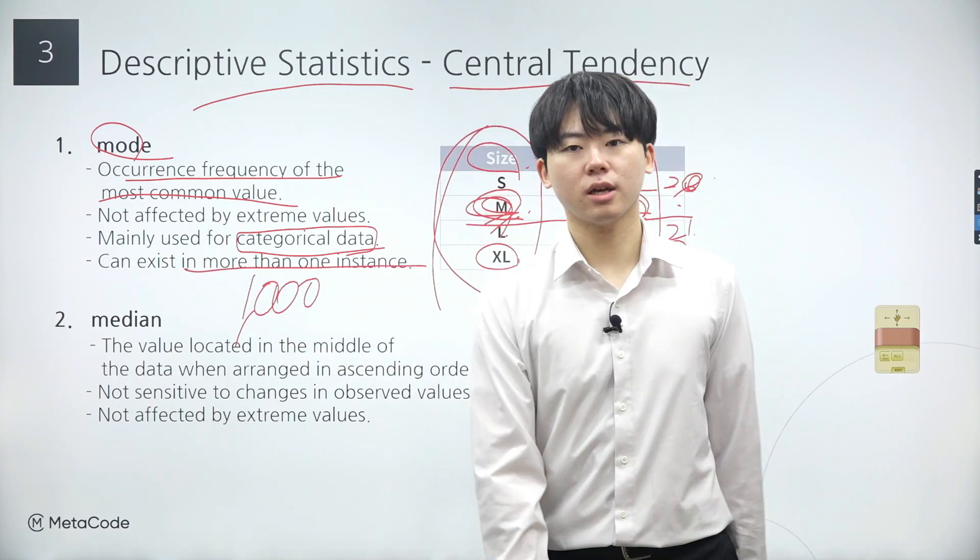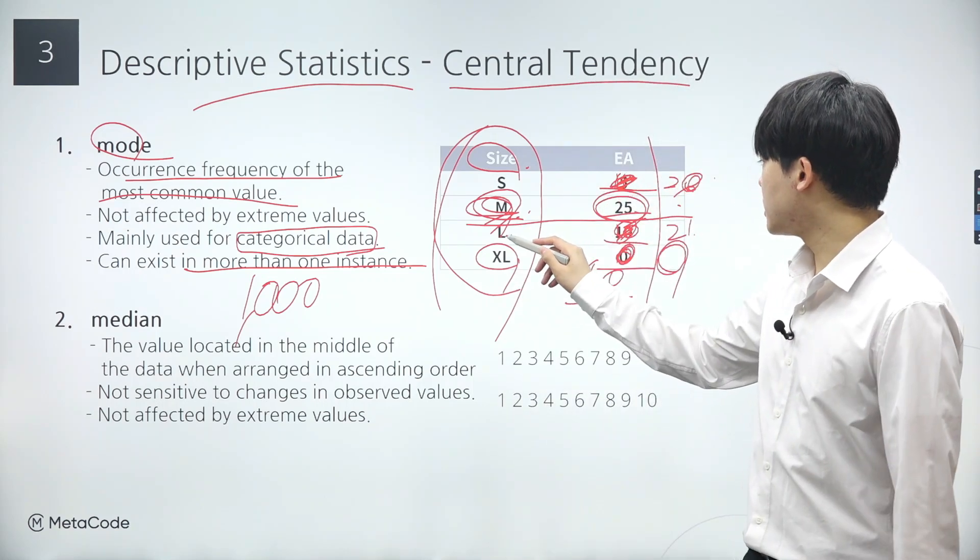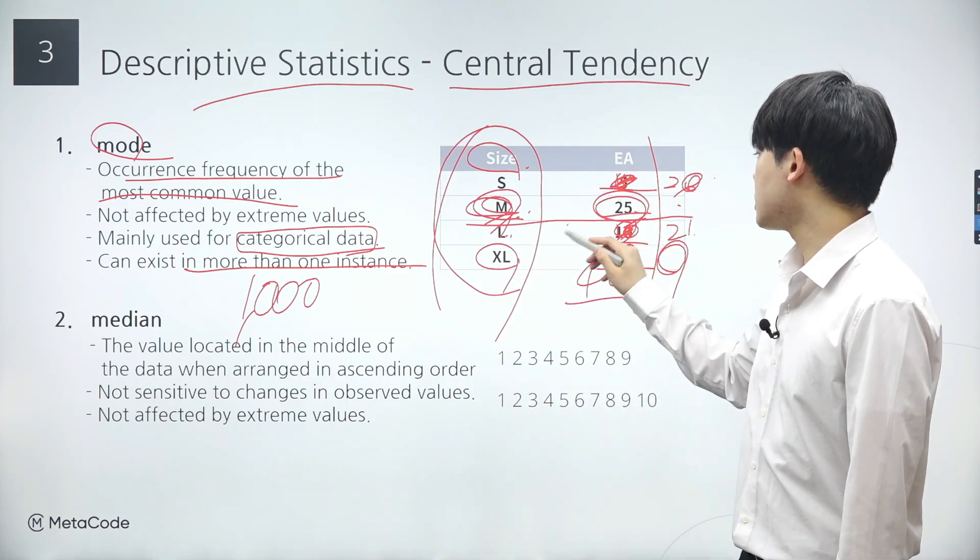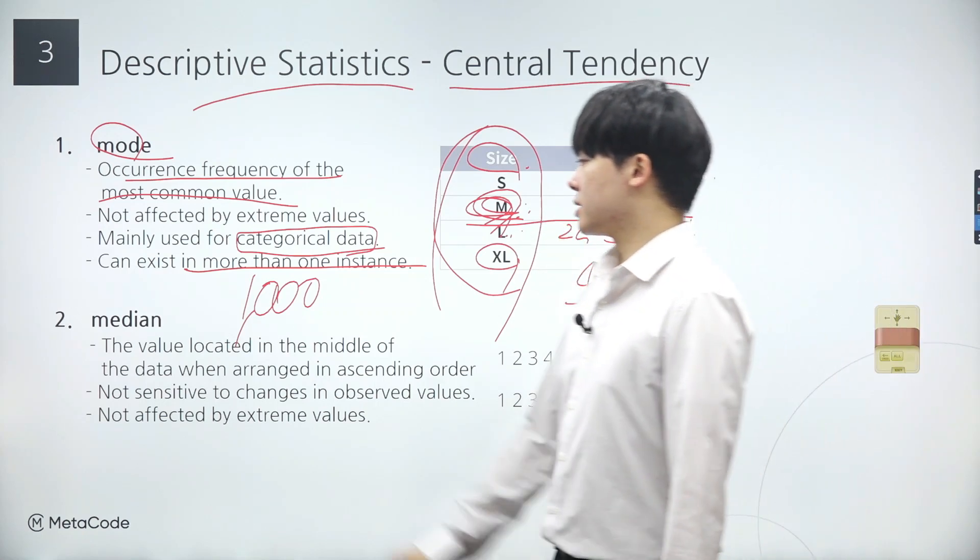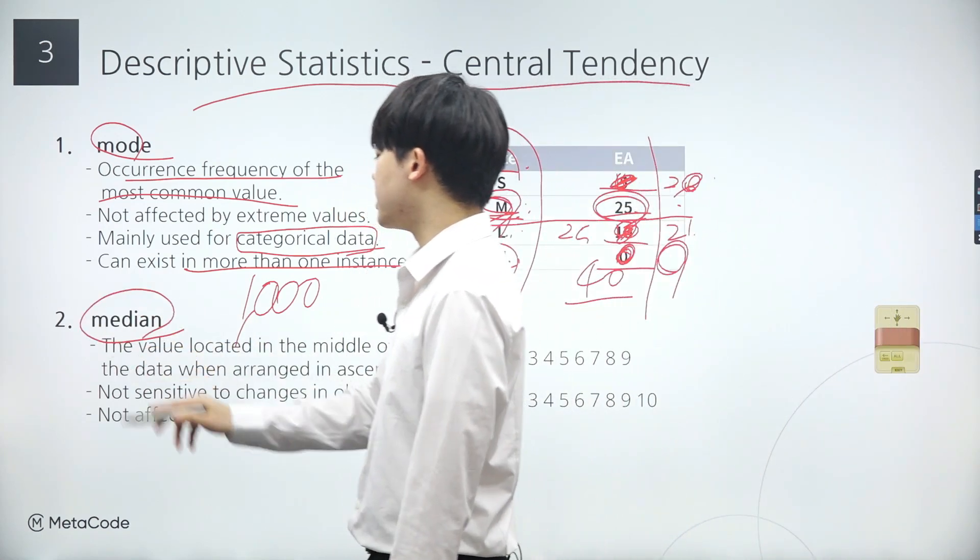Additionally, it's worth noting that a data set might exhibit multiple modes. If the number of sales for large shoes jumped to 25, both medium and large sizes will represent modes within the data set.